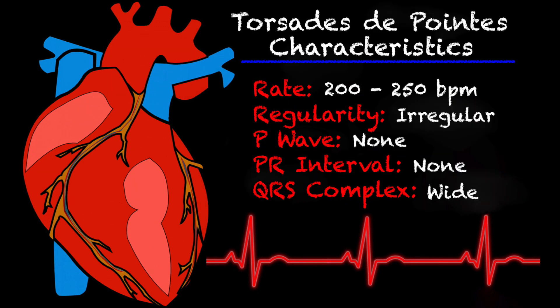Let's quickly go over some of the characteristics of torsades. Your rate is typically 200 to 250 beats per minute. It is a very irregular rhythm. There is no P wave, no PR interval, and the QRS complexes are wide. But unlike your monomorphic VTAC, the QRSs do vary quite a bit in size.